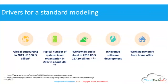Let us look at what are the drivers pushing standard modeling. Global outsourcing in 2019 was $92 billion — that is pre-COVID. With COVID, this will accelerate further in coming years, because once companies realize they can get work done remotely, the next phase is offshoring or outsourcing. This makes it more complicated without a modeling practice. Typically, systems in a company number about 500, but as everything becomes a service model, it will be much more complicated. Worldwide spending on the cloud is $227 billion, and with COVID it will be further isolated.